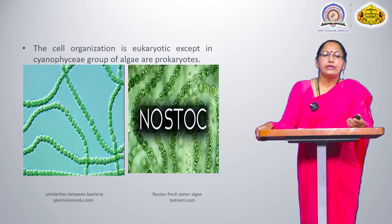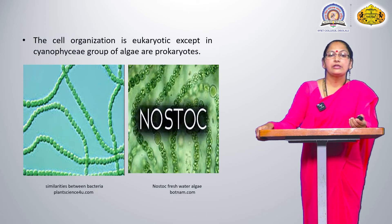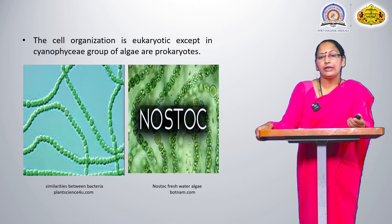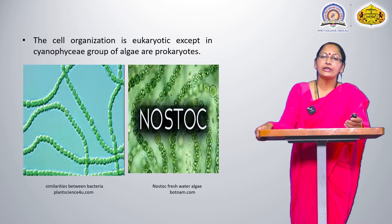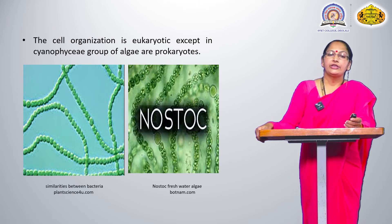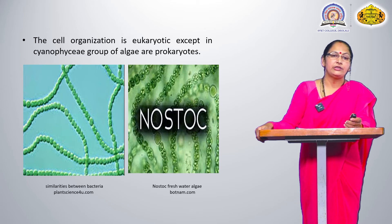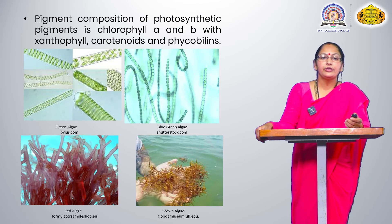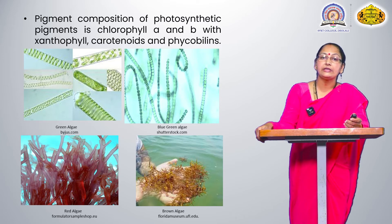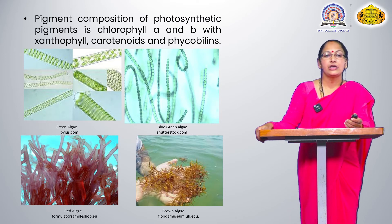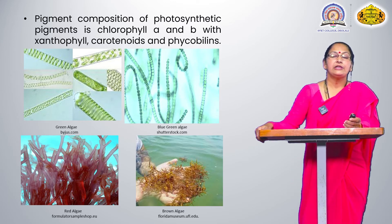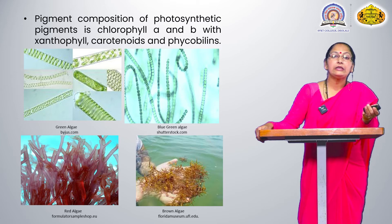Cell organization is eukaryotic, except in the Cyanophycean group of algae, which are prokaryotic. The Cyanophyta class of algae is prokaryotic in nature — the cell is not well developed with a nucleus. The pigment composition includes photosynthetic pigments: chlorophyll A and B, xanthophyll, carotenoids, and phycobilins. These pigments give algae their colors.